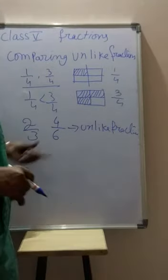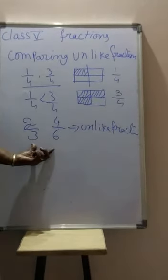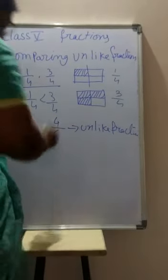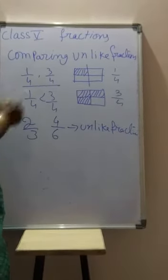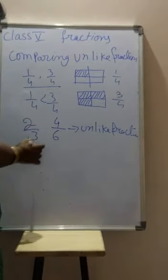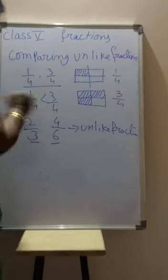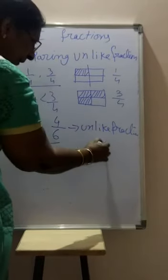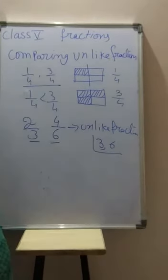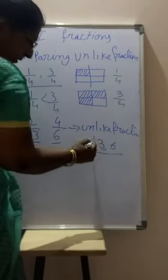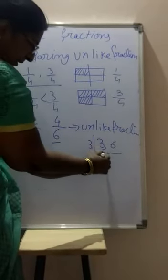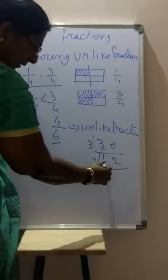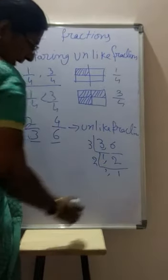What should you do? Both fractions can be made equivalent. You can convert them to equivalent fractions. These denominators need to be made equal. How to do this? You can find a number that both 3 and 6 divide into — using their common multiples.